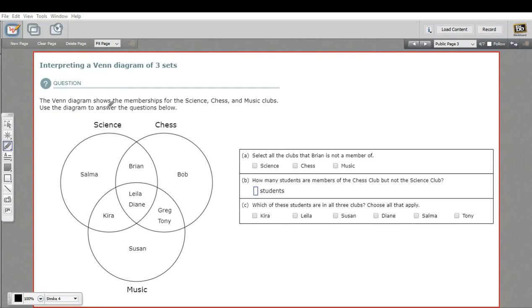In this problem, we're being asked to interpret some facts from a Venn diagram. Venn diagrams are these diagrams that use circles that overlap to show members of sets, who belongs to what group.